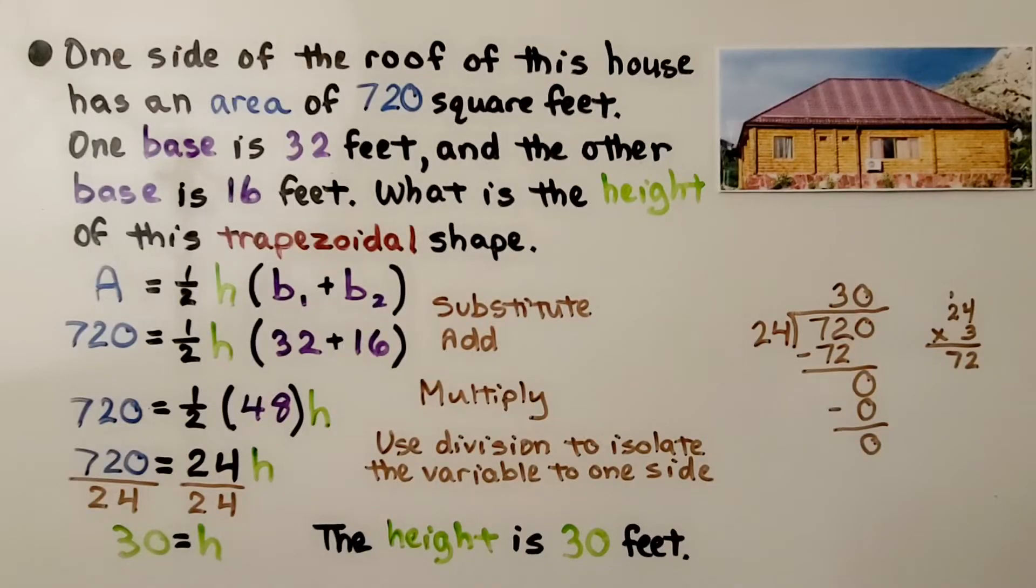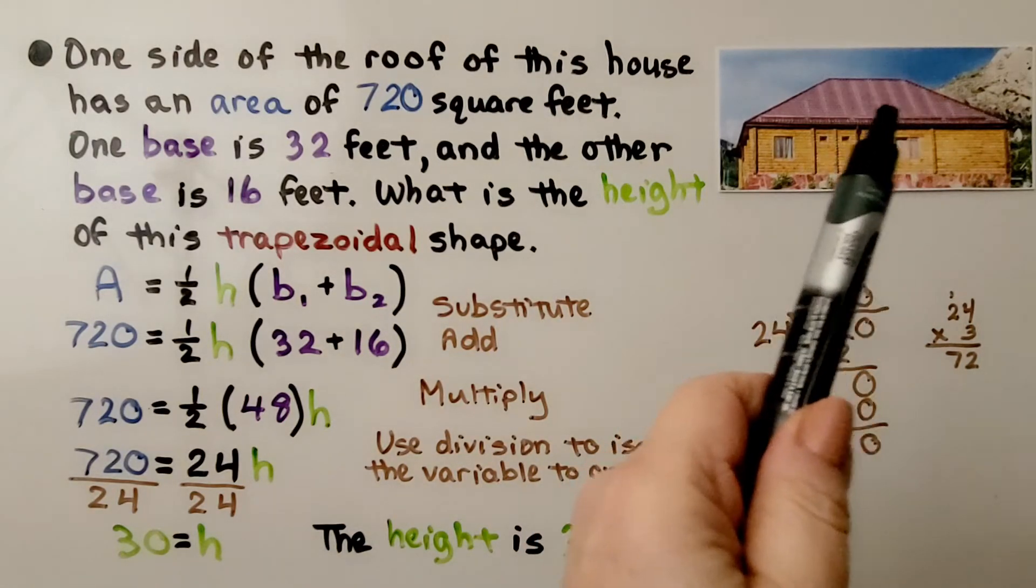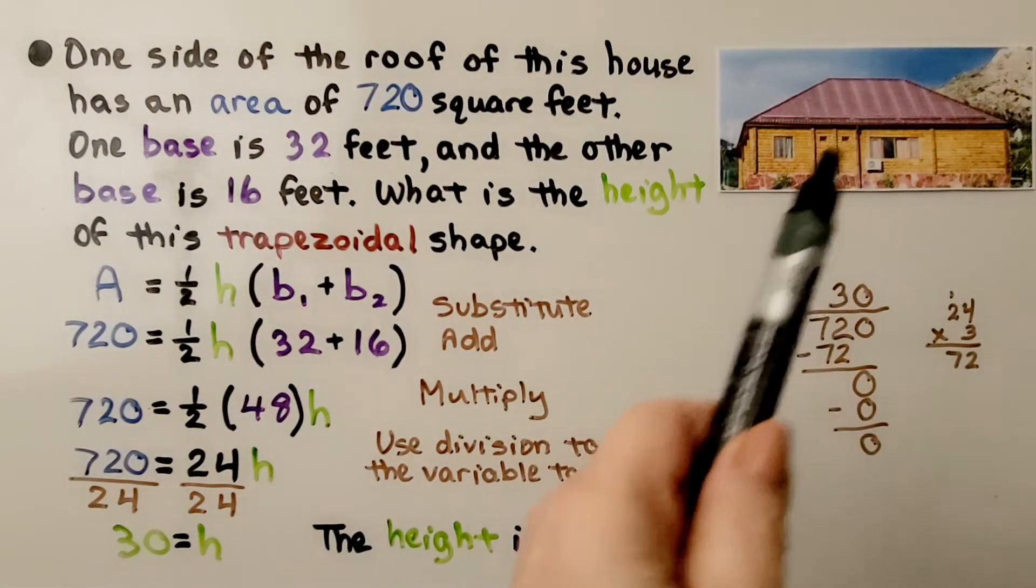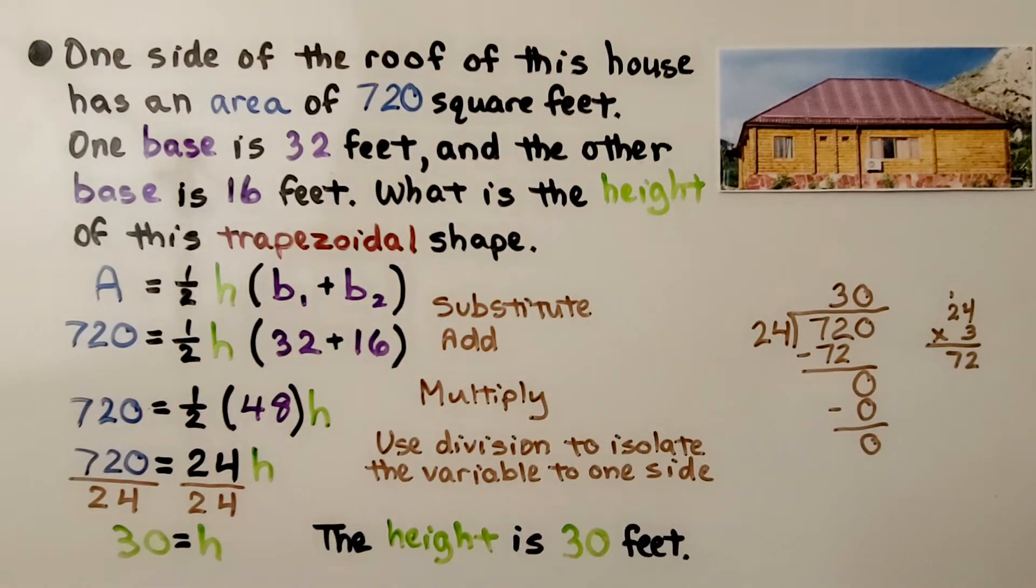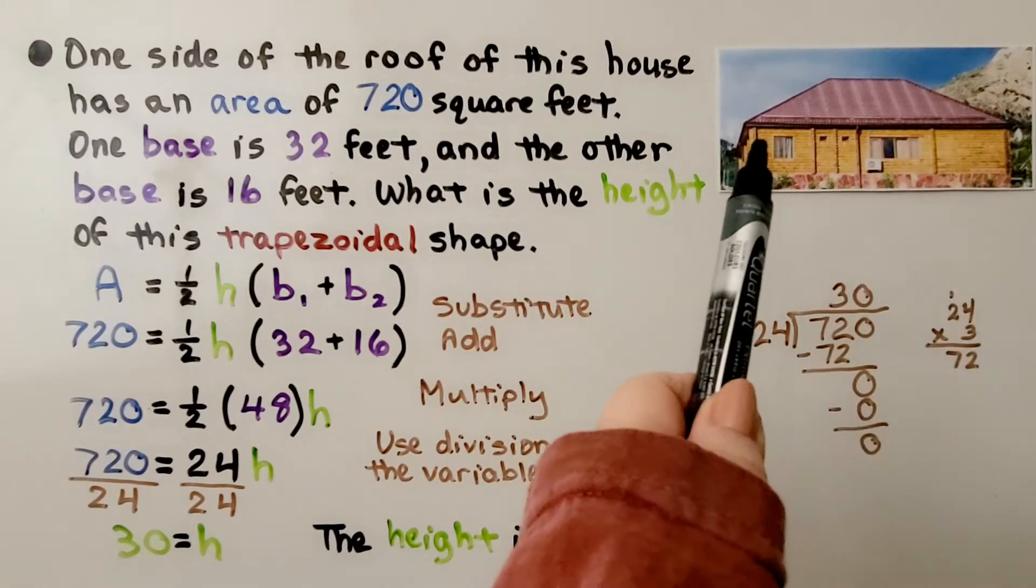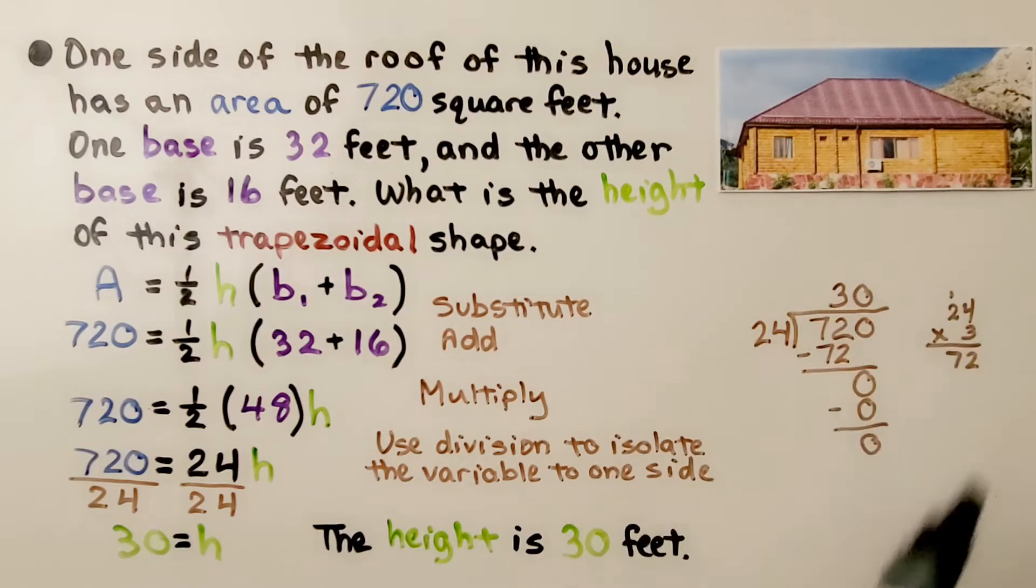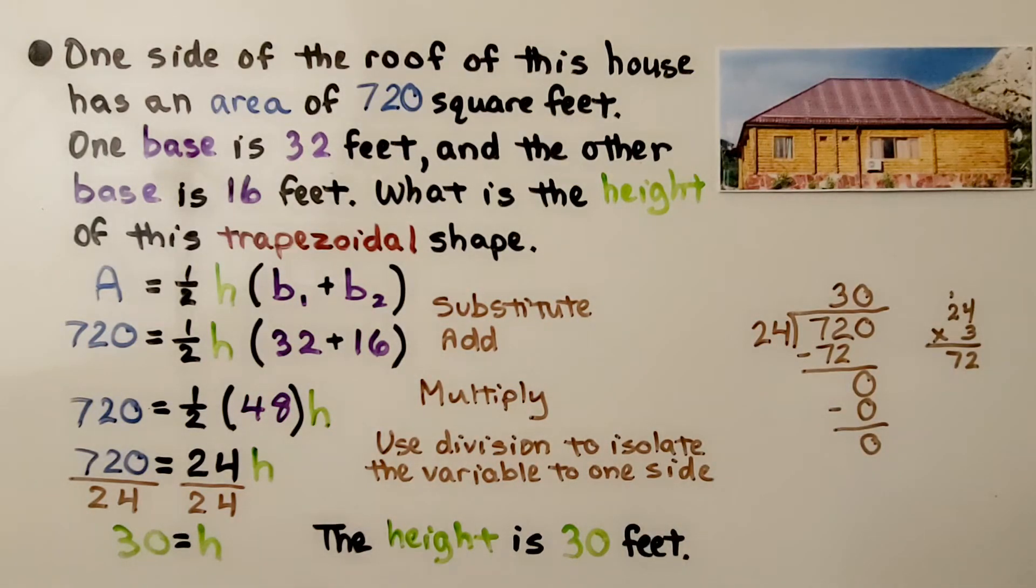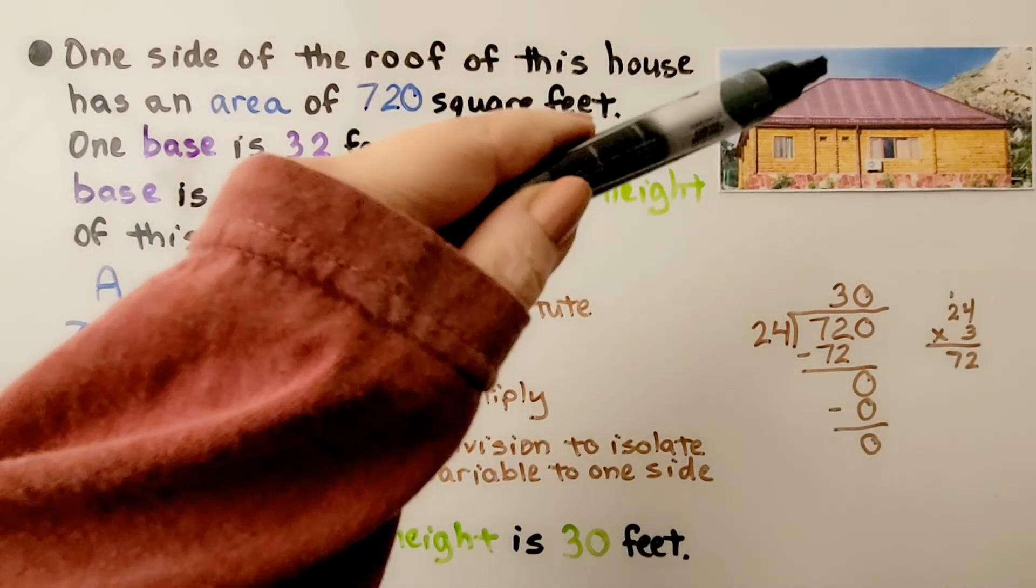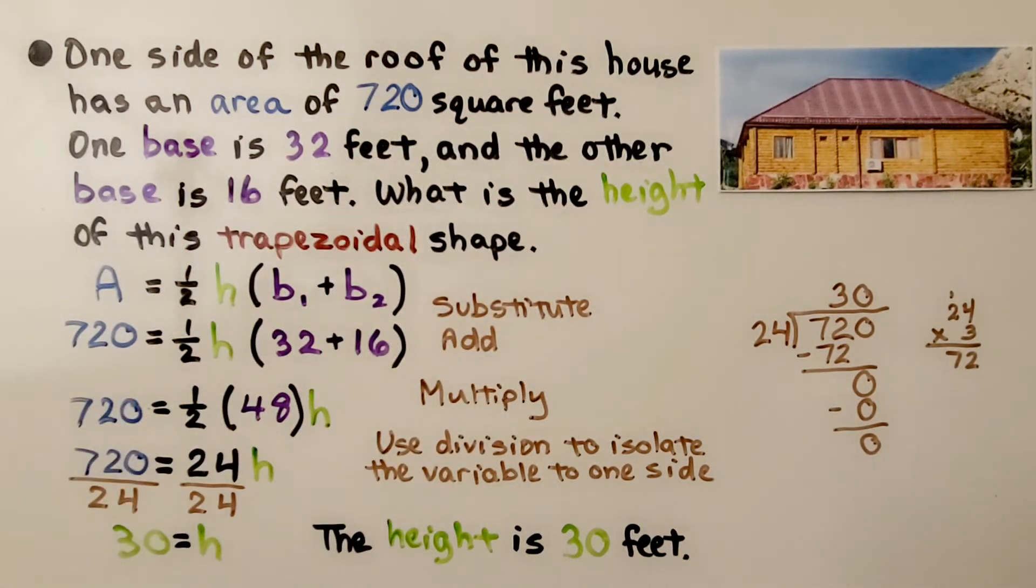Let's try another one. One side of the roof of this house has an area of 720 square feet. One base is 32 feet, that's probably this one right here. The other base is 16 feet, so that's this one up here. What is the height of this trapezoidal shape? We need the height, which is right here.